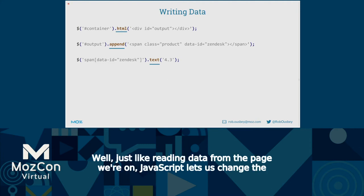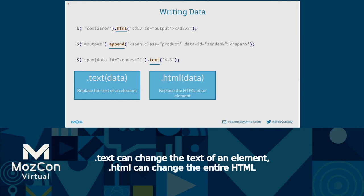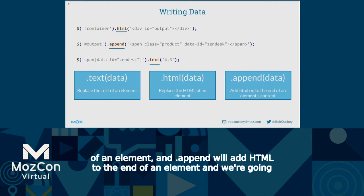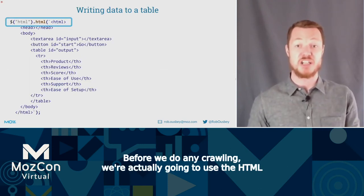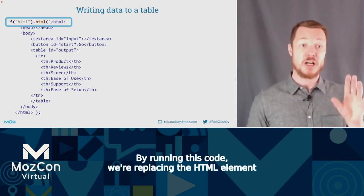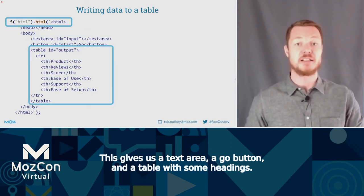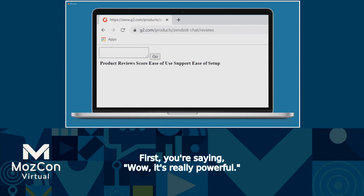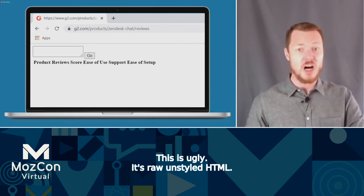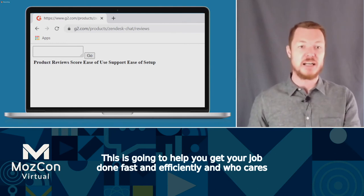Just like reading data from the page, JavaScript lets us change the page content — jQuery makes it even easier. .text changes the text of an element, .html changes the entire HTML, and .append adds HTML to the end of an element. Before any crawling, we use the .html function to overwrite the entire contents of the page — replacing absolutely everything with a text area, a Go button, and a table with headings. And here's what the front page of G2 turns into. Yes, it's really powerful, and yes, it's ugly — raw, unstyled HTML. But this is for you, not for anyone else to see.